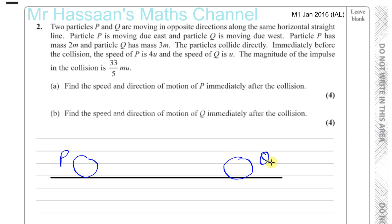Particle P is moving due east. East is that way and west is that way. Particle P has a mass of 2m and particle Q has a mass of 3m. P is moving in this direction, Q is moving in this direction, east and west.